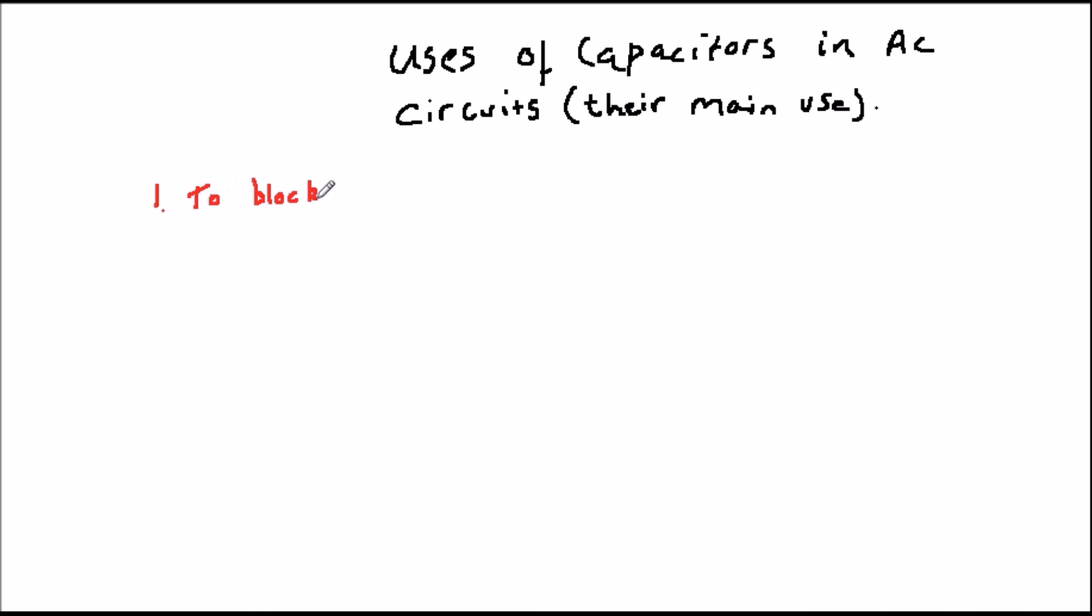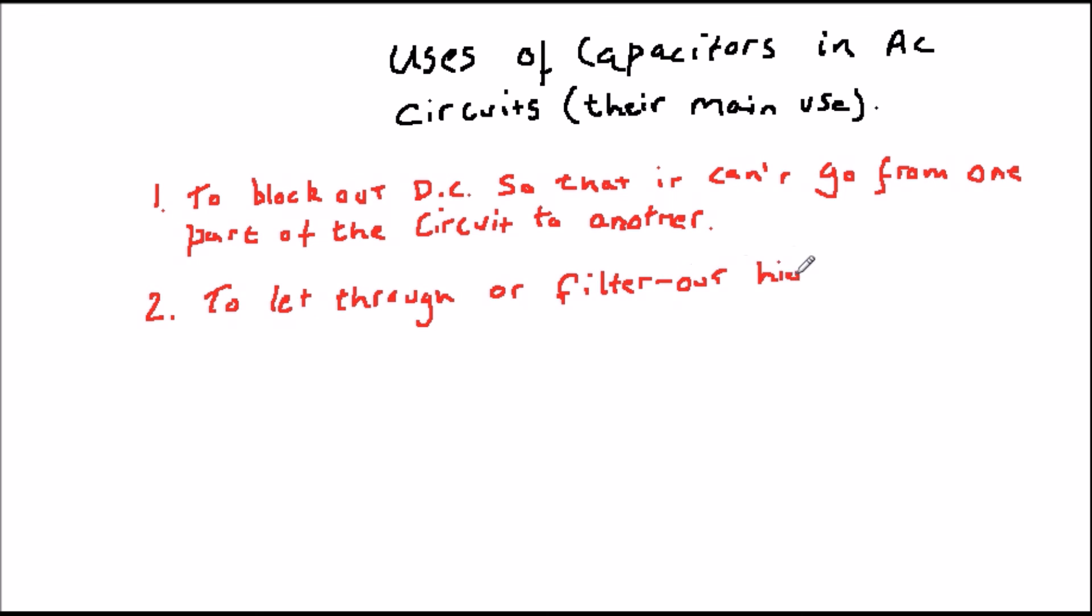And this leads us to the purposes of capacitors in AC circuits. And there are three main ones. Firstly, they can block out DC, for example, from power supplies, and isolate one part of the circuit from another by not allowing the DC to flow through, but allowing the AC or signal to flow through.